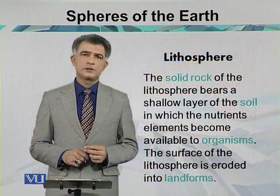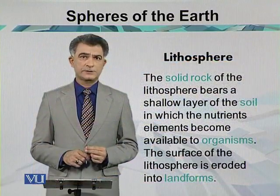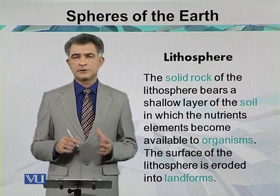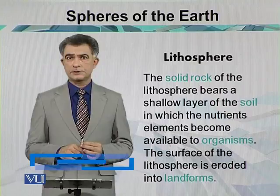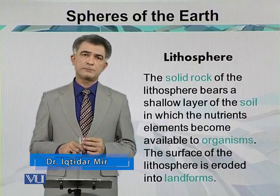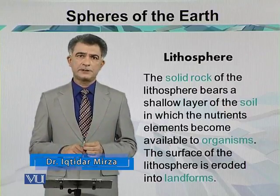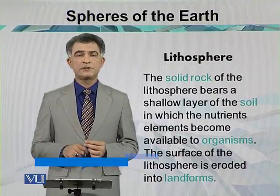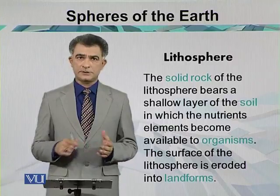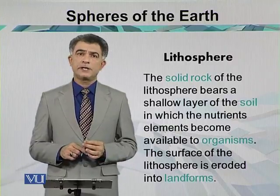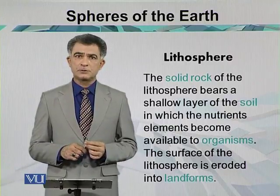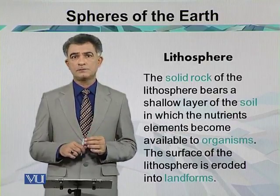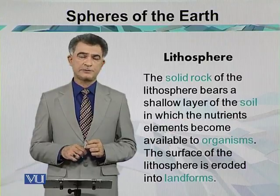The solid part of the Earth is also composed of certain types of nutrients in the form of soil. This soil lies over the parent material of the planet and is deposited by certain agents — most importantly water, as well as wind and glaciers. The surface of the Earth is composed of this layer, which is important for certain types of activities.